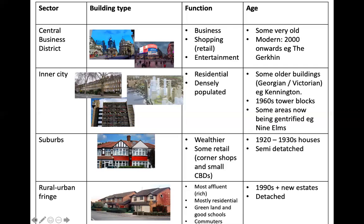Finally, the rural urban fringe. This is probably one of the richest areas of the city, mostly residential. There's green land, good schools, good services, and it's largely inhabited by commuters. These areas really started to be developed in the 1990s when new housing estates were built, pushing out into the countryside. These areas are much more spread out, with detached houses.